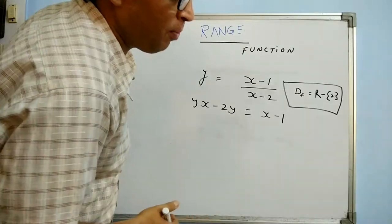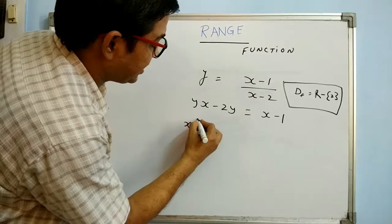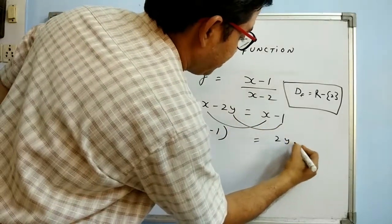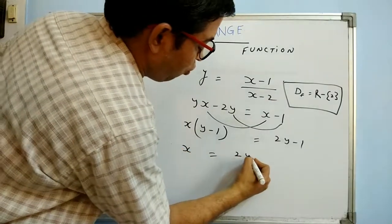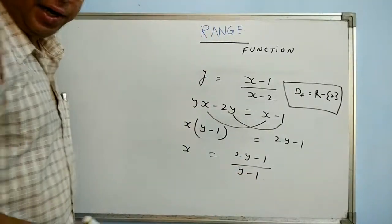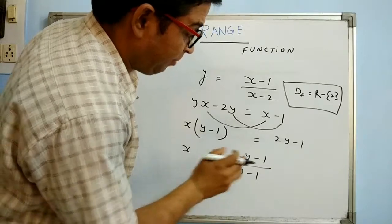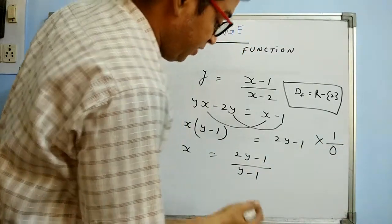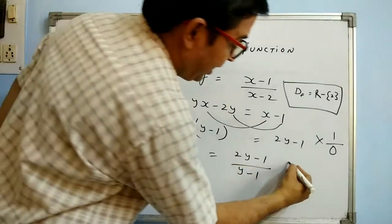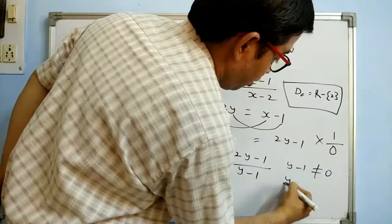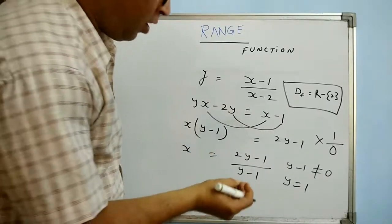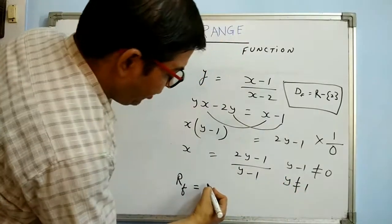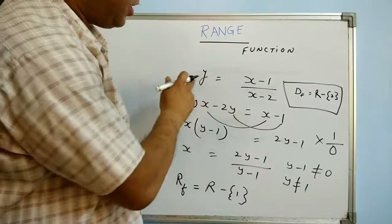Making x the subject: from y(x − 2) = x − 1, we bring the x terms together to get x(y − 1) = 2y − 1, so x = (2y − 1)/(y − 1). For x to be defined, the denominator must not be 0, so y − 1 ≠ 0, meaning y ≠ 1. Therefore, the range of this function is all real values except 1 — when y = 1 there is no corresponding value of x.